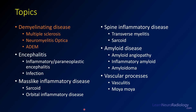There are going to be about six divided lectures. In today's lecture we'll talk about demyelinating diseases — namely multiple sclerosis, NMO, and ADEM. In other lectures we'll cover encephalitis, mass-like inflammatory diseases like sarcoid and orbital inflammatory disease, spine inflammatory disease including transverse myelitis, amyloid disease including CAA and amyloidomas, and finally vascular processes.